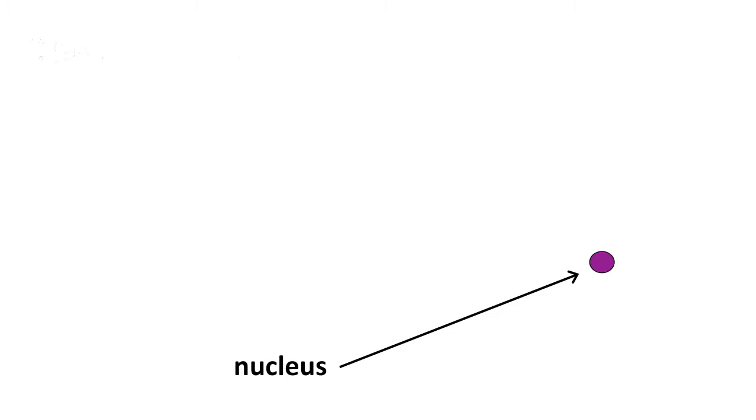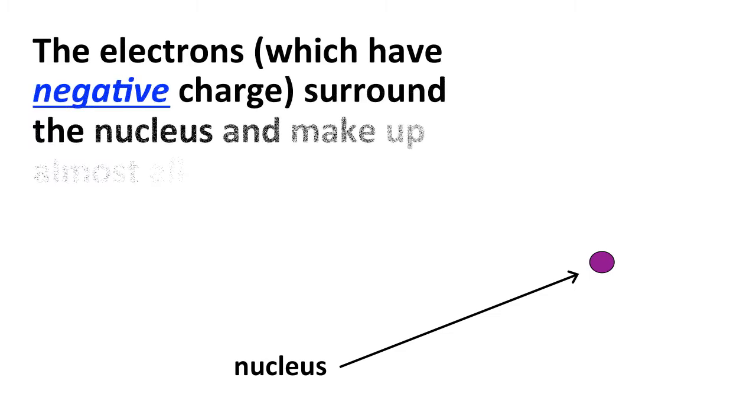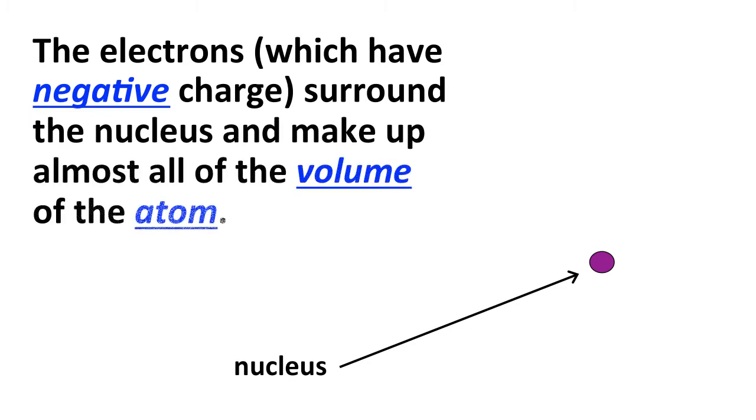Now sometimes we represent the whole nucleus by a single sphere. So all the protons and all the neutrons are in this sphere. And those protons and neutrons, the nucleus, are surrounded by what are called electrons. And electrons have a negative charge. They surround the nucleus and they make up almost all of the volume of the atom.